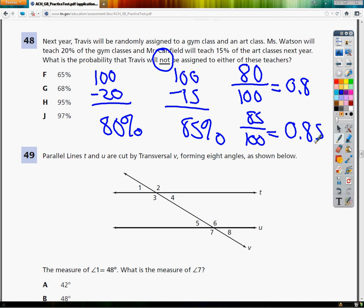So I do 0.8 times 0.85. And when I type that in, I get 0.68. And if you didn't know, to convert back to the percentage, I just multiply by 100, and I get 68%.